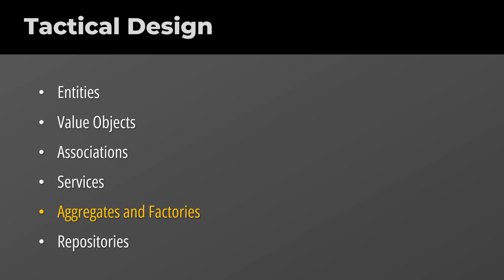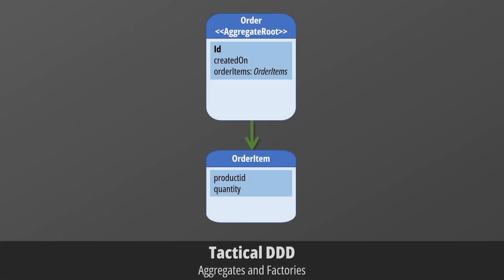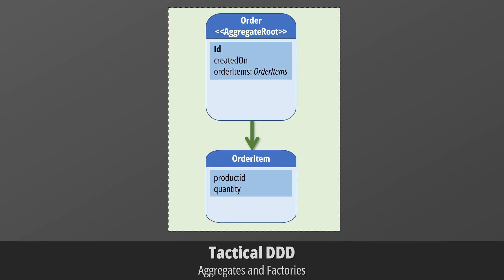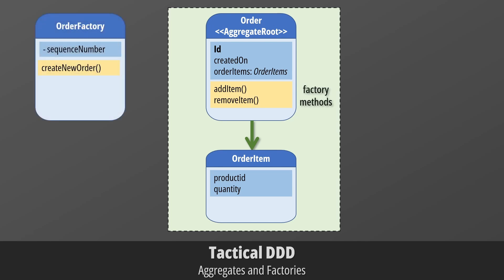Now we talk about aggregates and factories. When the model starts growing large, we use aggregates to group a set of closely related entities. We establish a boundary and a root, which we use to control all access to the objects inside. This way we can simplify our model by allowing references only to aggregate roots, and we can guarantee sanity of the entire aggregate as a whole. To build and interact with complex objects like aggregates, we can use factories. Factories could be methods — for example, we could expose a method on orders to create new line items. Factories can also be standalone classes which generate aggregates or entities, such as an order factory generating sequentially numbered orders.